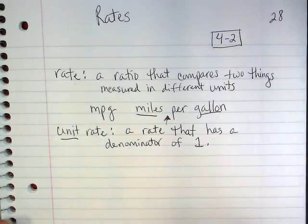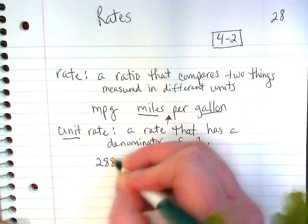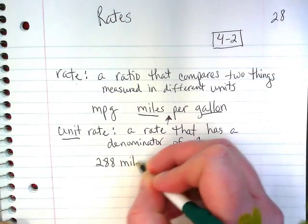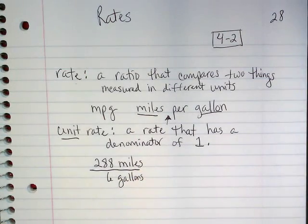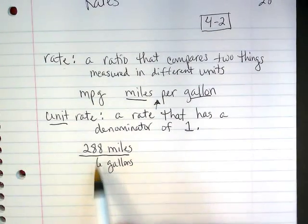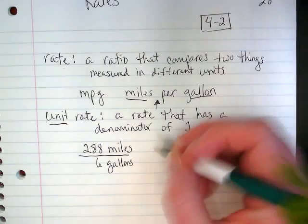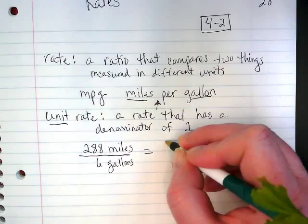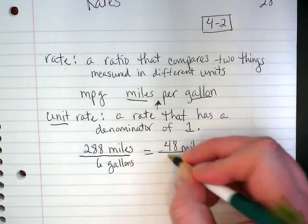So an example of how we would take a rate and make it into a unit rate. If I kept track of my miles for my car, and I drove 288 miles, and I used 6 gallons of gas. That would be a rate. But now if we take our calculator and we divide 288 by 6, what do we get? So then we end up with 48 miles per one gallon.